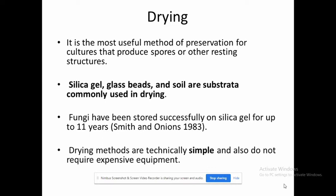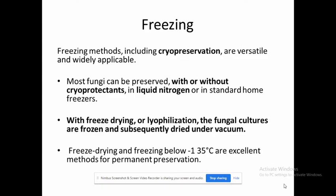This method is very simple and requires no more special equipment. However, physiological features may get tampered. To preserve those features, cryoprotective agents are used. If you are not using a cryoprotectant, then liquid nitrogen is used for preservation. With freeze drying or lyophilization, cultures are frozen and subsequently dried under vacuum conditions. Freezing below minus 137 degrees Celsius is an excellent method for permanent preservation.